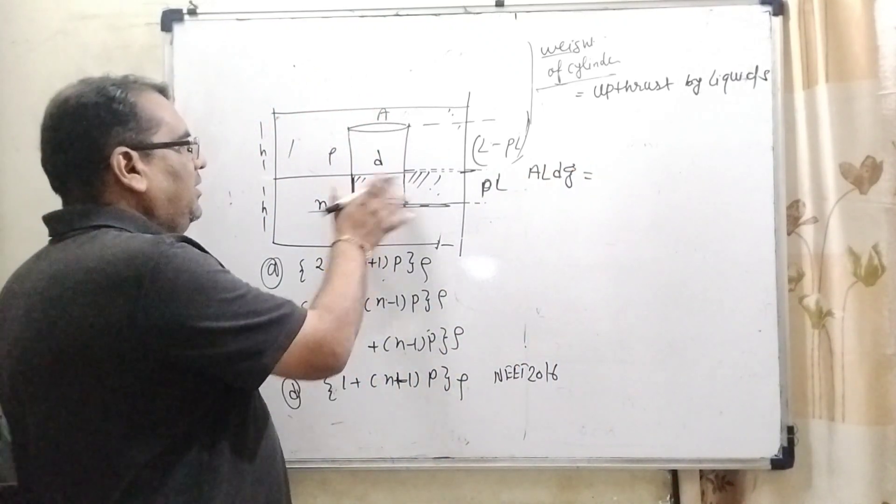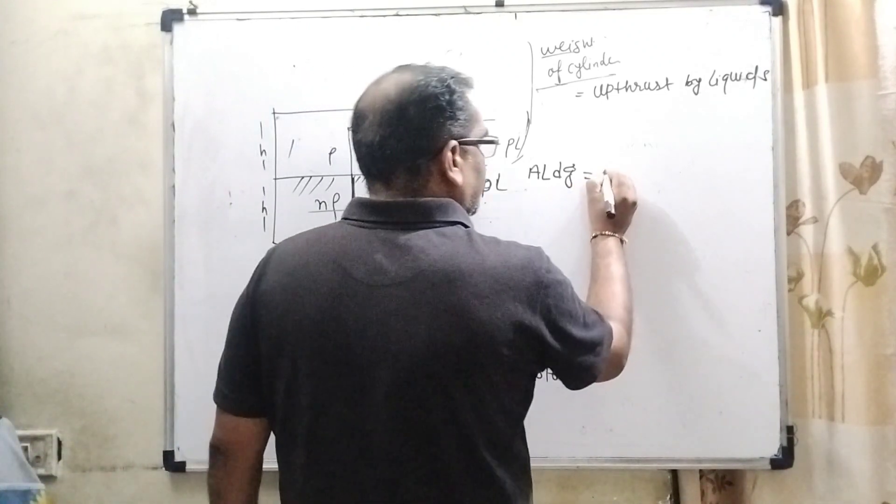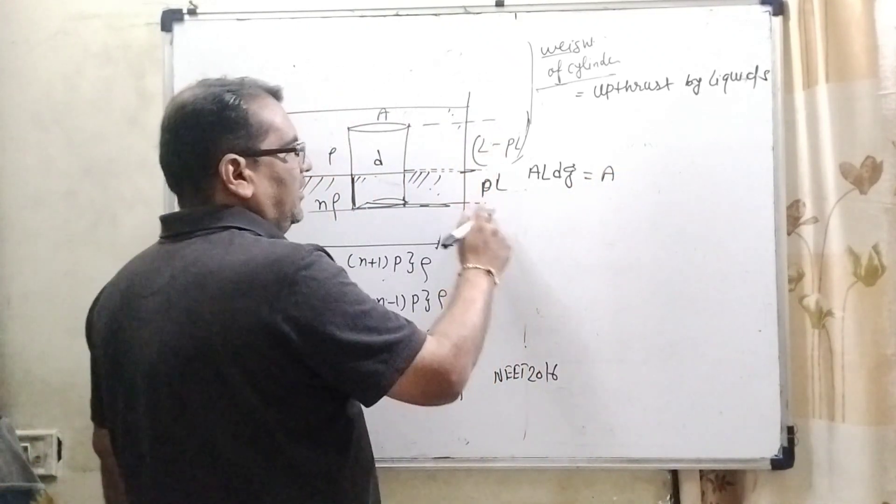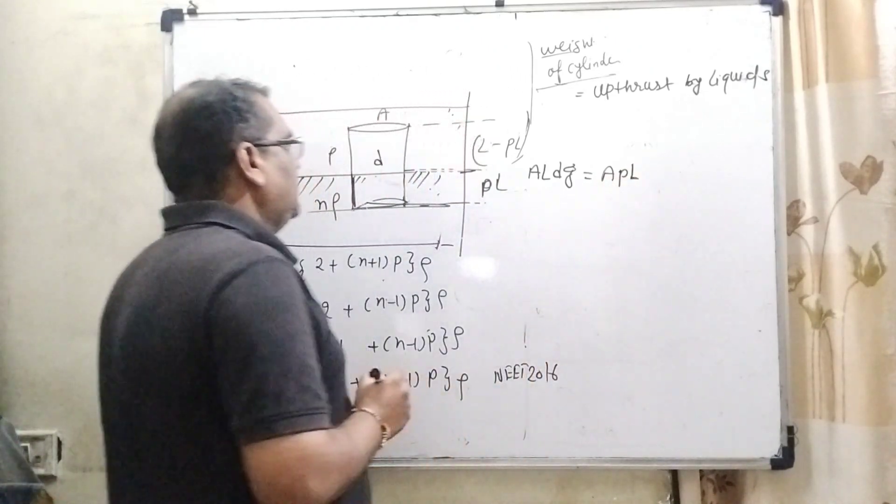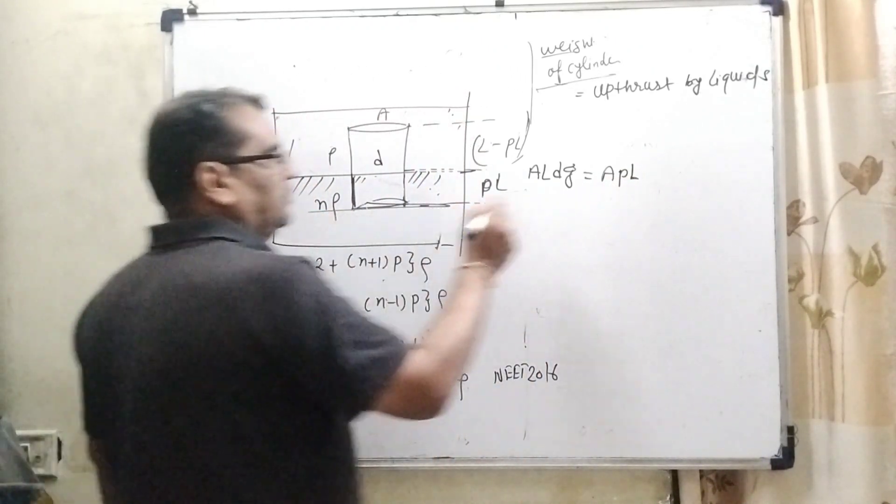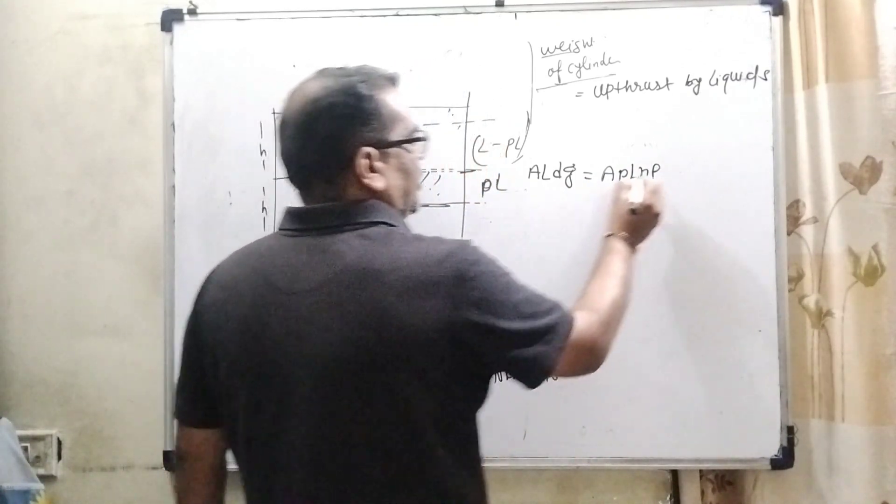Upthrust acting by the lower liquid: area of cross-section A, length is pL, density is nρ, and g.